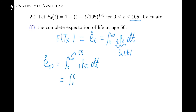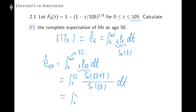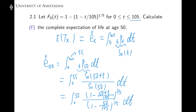Now in this integration from 0 to 55, using the very important formula, we calculate S0(50 + t) over S0(50) dt. The numerator is 1 subtract ((50 + t)/105)^(1/5), and the denominator is 1 subtract (50/105)^(1/5). Solving this integration gives us 45.83.